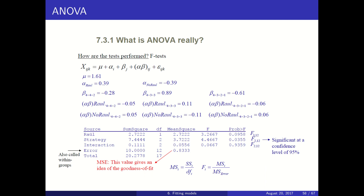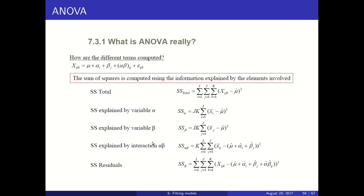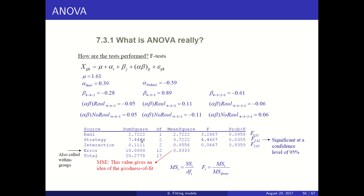To perform this test, you compute a statistic called F. F tells you how strong the evidence is that a factor is making a difference. Going back to the football example, these are our estimates. There are ways of translating these estimates into the sum of squares, and from the sum of squares we calculate F.